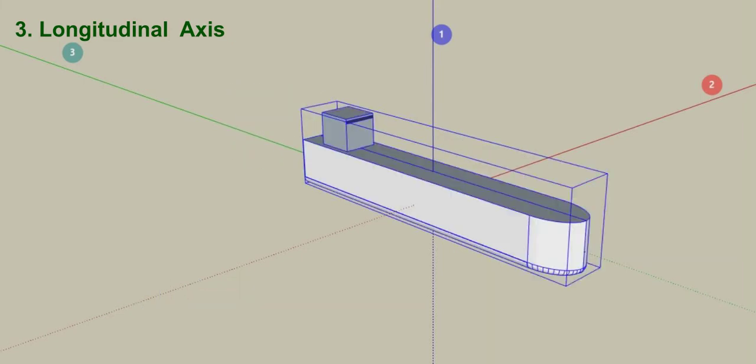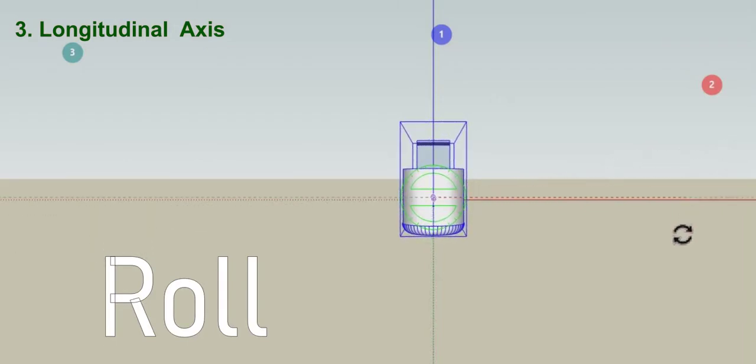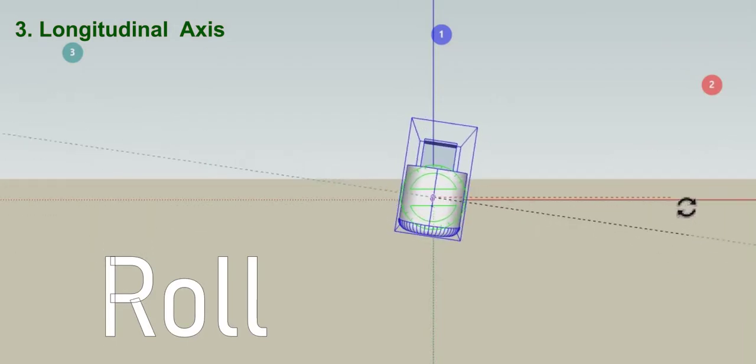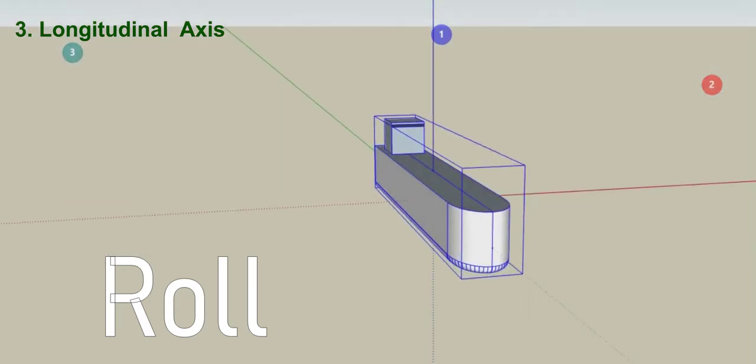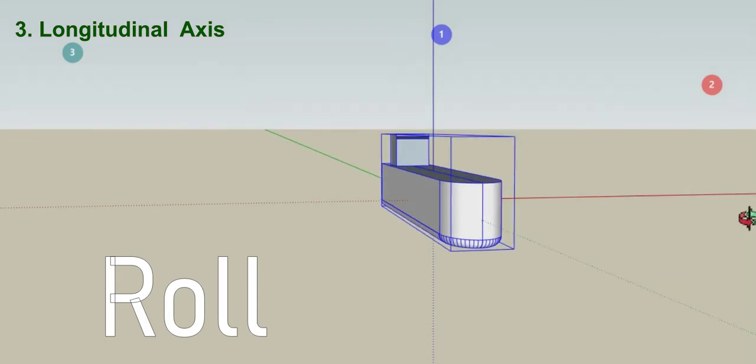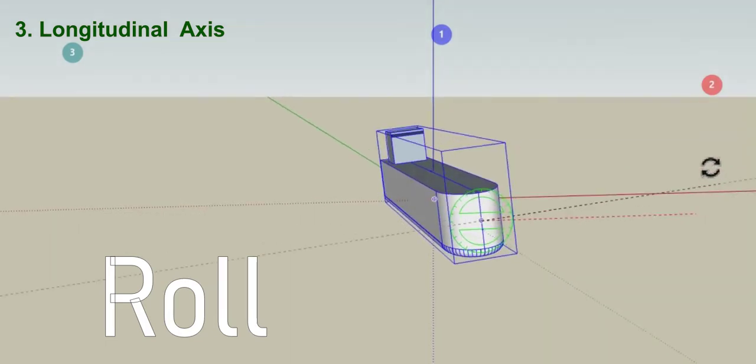And our final type of rotational force. Let's change the view here. Looking head on the vessel, we're now looking right down that longitudinal axis. We're going to see what happens when the rotational motion is applied. We're getting roll. This is rolling or roll.